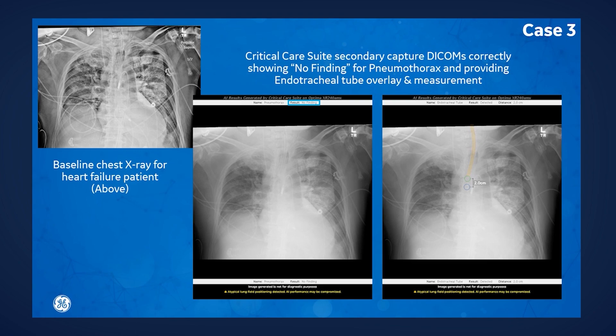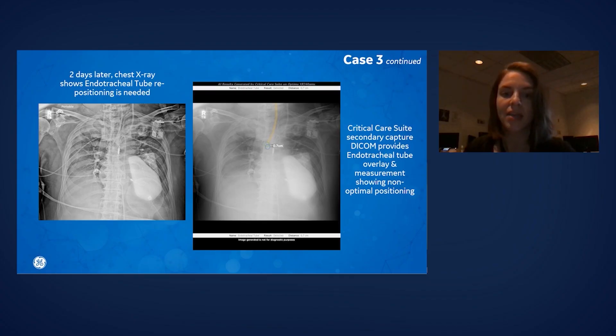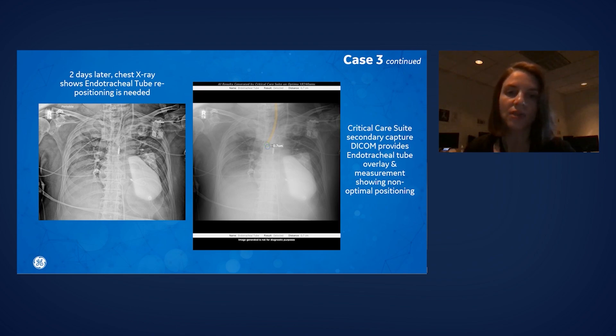And then finally, a set of x-rays on a patient with heart failure who was intubated in our ICU. This first study shows no pneumothorax, and we can see the endotracheal tube measurement is provided two centimeters above the carina. If we advance to the next slide, we can see a subsequent radiograph performed for this patient two days later. Now you can see that the endotracheal tube has been advanced very near the carina, and on that secondary capture image, the distance is indicated as less than one centimeter from the carina. This is a case where repositioning of the endotracheal tube would be recommended, and we needed to make a phone call to inform them of that.